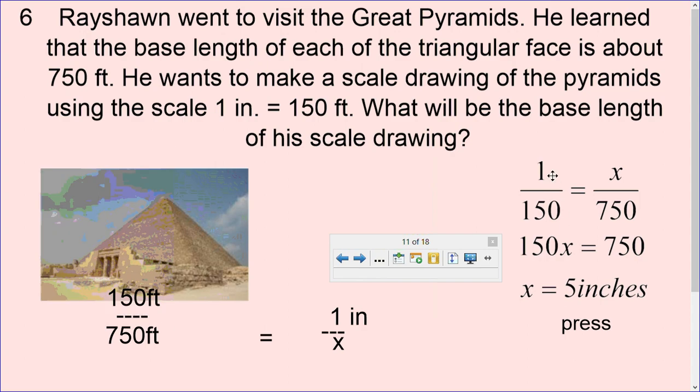So I have it set this way, 1 over 150. It's okay if I set it this way. 1 inch equals 150 feet. How many inches equals 750 feet? So I'll have 150X equals 750 times 1, which is 750. When I divide both sides by 150, I'm going to get X is equal to 5 inches.